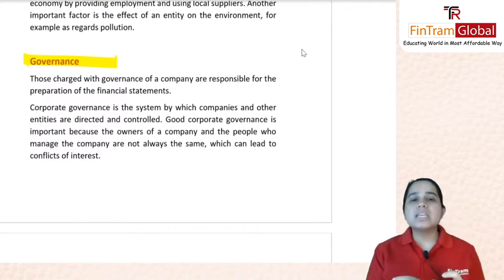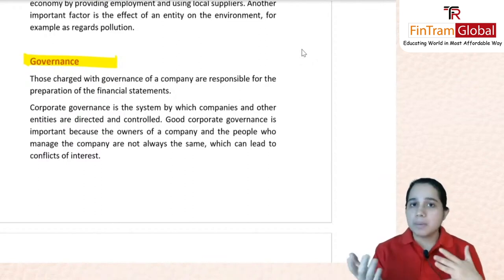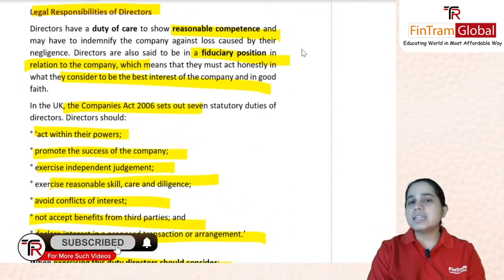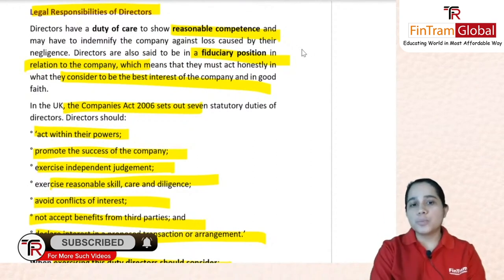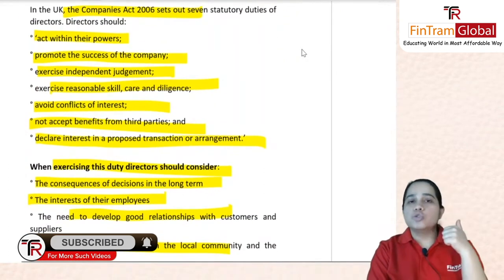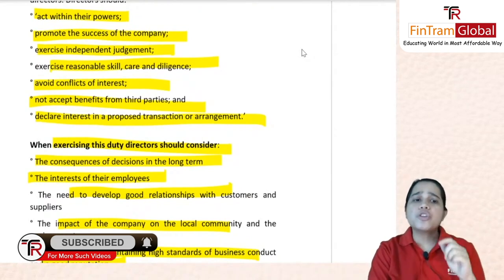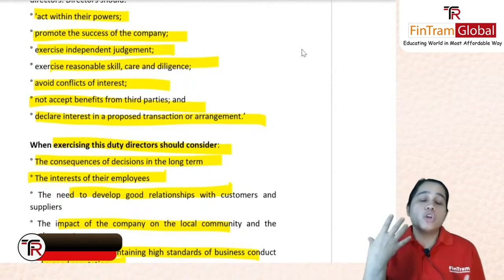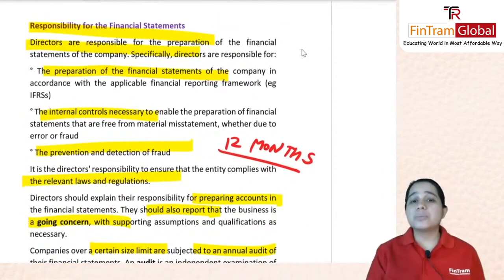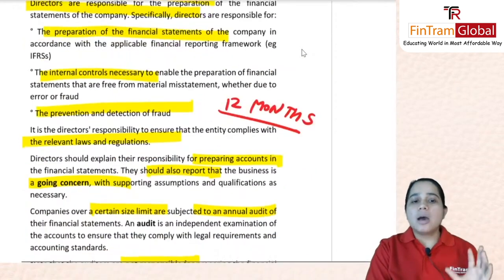The governance concept: it is the system by which companies are directed and controlled. Good corporate governance is needed because often the people managing the company are not the same as the owners, which could lead to conflicts of interest. Directors have legal responsibilities — duty of care, reasonable competence, and a fiduciary position. The Companies Act of 2006 in the UK listed seven statutory duties: act within powers, promote success, exercise independent judgment, exercise reasonable care, avoid conflict of interest, not accept benefits from third parties, and declare any interest in a transaction. Directors — not auditors — are responsible for preparing financial statements, and going concern means the company will continue for the foreseeable next 12 months.